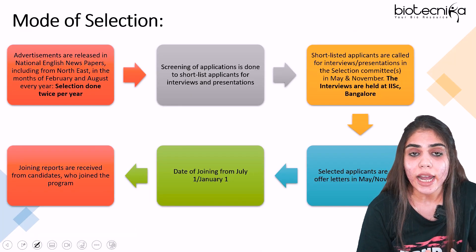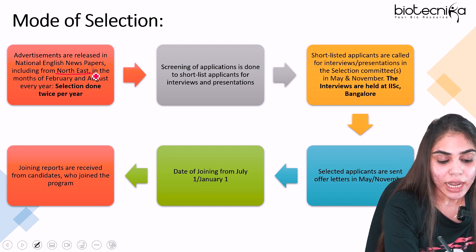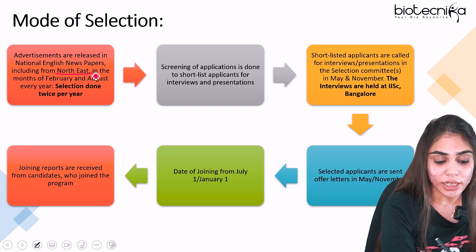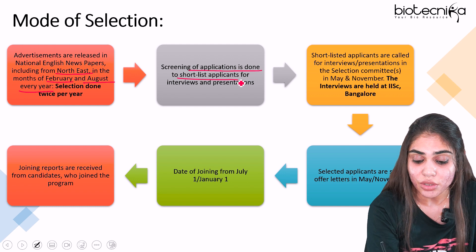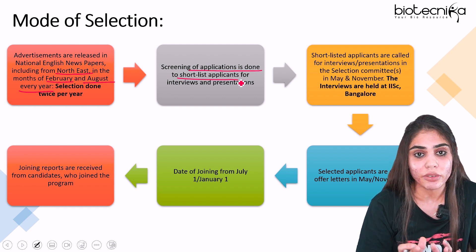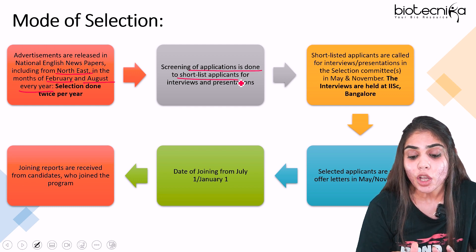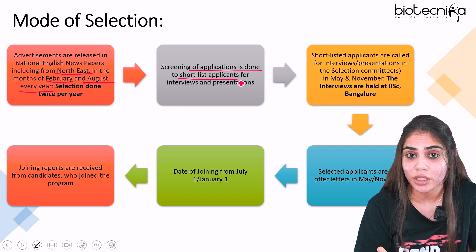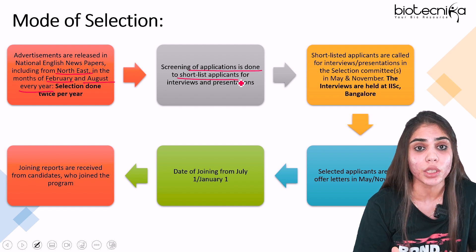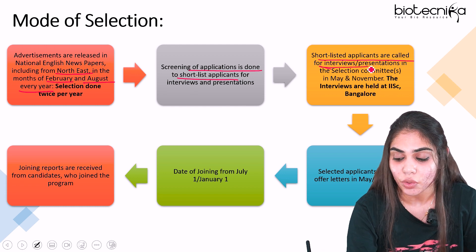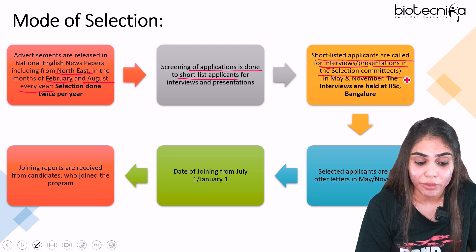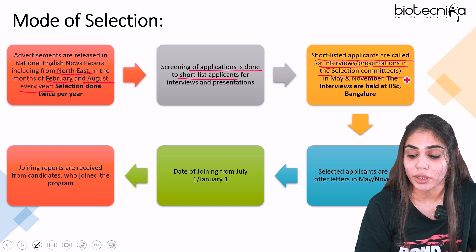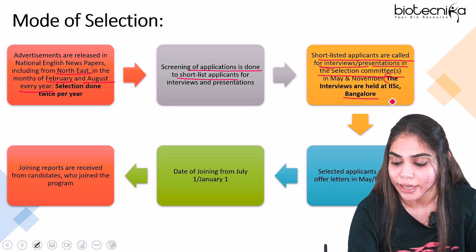Regarding the mode of selection: the advertisement is made in national English newspapers and is released twice a year — in the month of February and August. Screening of applicants is done to shortlist candidates for interviews and presentations, where you have to present your PhD work. Shortlisted candidates are called for interview and presentation before the selection committee — in the month of May if you applied in February, or November if you applied in August.